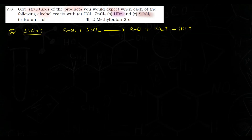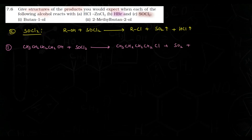First part: butan-1-ol — CH3-CH2-CH2-CH2-OH — ki reaction SOCl2 ke saath karwayenge. Sirf OH ki jagah CL likh dena hai. Product milega: CH3-CH2-CH2-CH2-Cl, saath mein SO2 aur HCl. Is compound ka naam hai 1-chlorobutane.